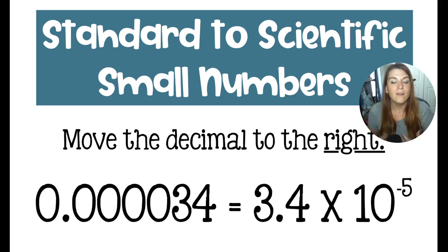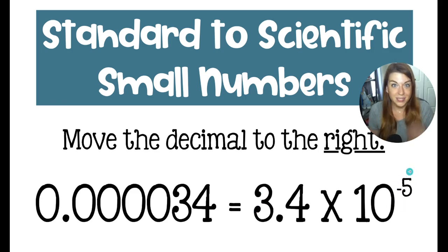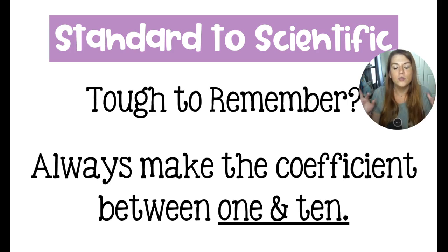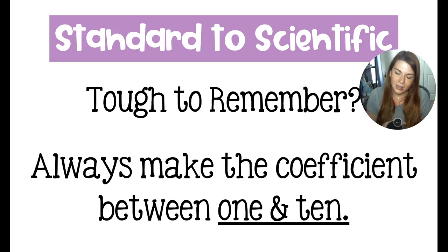If you truly have a negative number that needs to be converted into scientific notation, the negative would be in front of the whole number. The negative on the exponent just tells you it's a tiny number. I know that trying to remember which direction to move the decimal is tricky — I even sometimes get it wrong. So I just tell myself: get that coefficient between one and 10 and go from there. When you have tiny numbers, it's going to be moving to the right. When you have big numbers, it's going to be moving to the left.